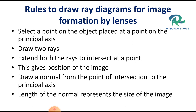Select a point on the object placed at a point on the principal axis. Draw two rays and extend both rays to intersect at a point. This gives the position of the image. Draw a normal from the point of intersection to the principal axis. The length of the normal represents the size of the image.